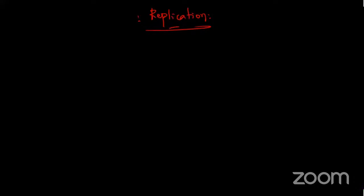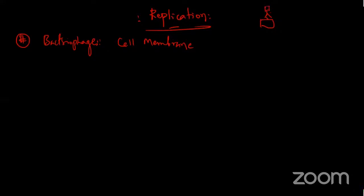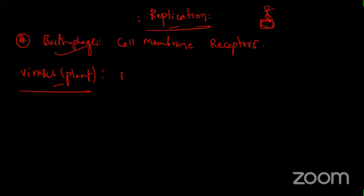Bacteriophages require cell membrane receptors to make entry because they make an active entry - sitting on the cell with a tail and head, injecting the genome, leaving a ghost cell. All other viruses except bacteriophages do not require cell membrane receptors. Plant viruses do not need a receptor or cell membrane receptor as their basic gateway.